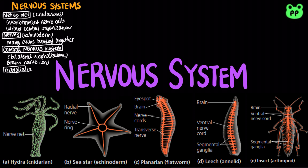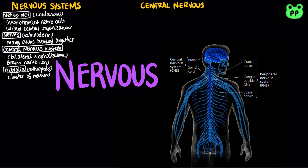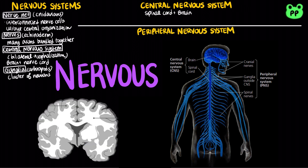Annelids and arthropods have segmentally arranged clusters of neurons called ganglia. In vertebrates, the central nervous system is composed of the brain and the spinal cord, whereas the peripheral nervous system is composed of nerves and ganglia.